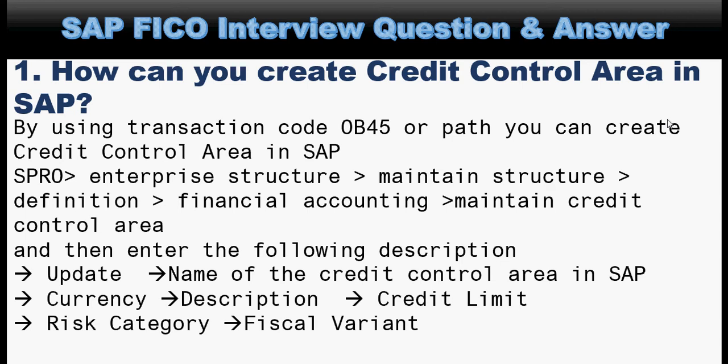Go to SPRO, Enterprise Structure, Maintain Structure, Definition, Financial Accounting, then click on Maintain Credit Control Area. Then enter the following descriptions: name of the credit control area, currency, description, credit limit, risk category, and fiscal variant.